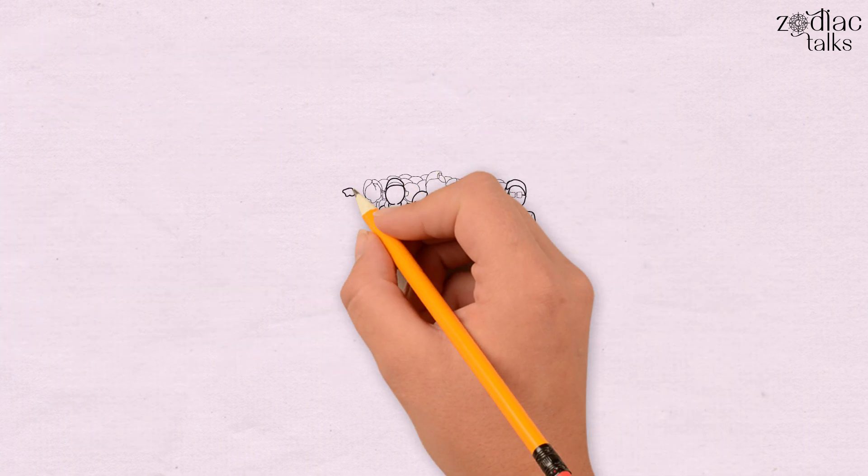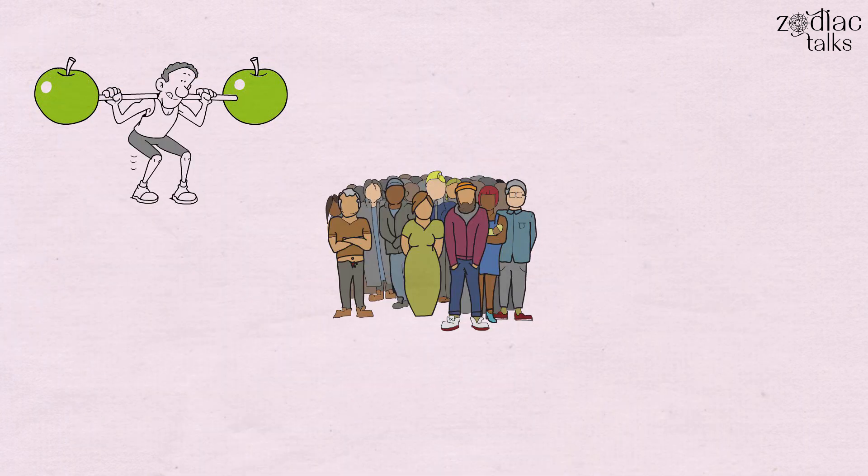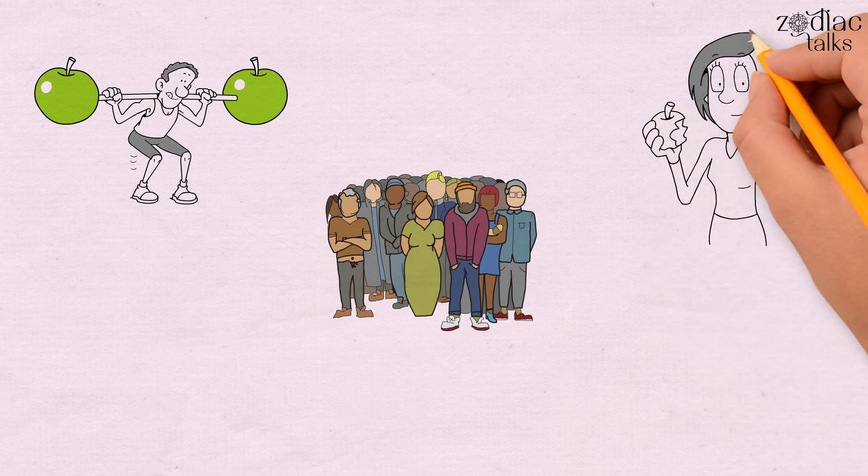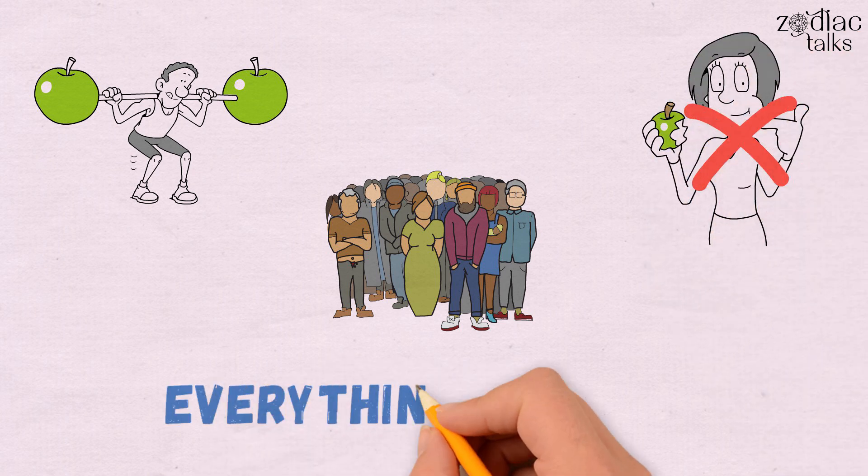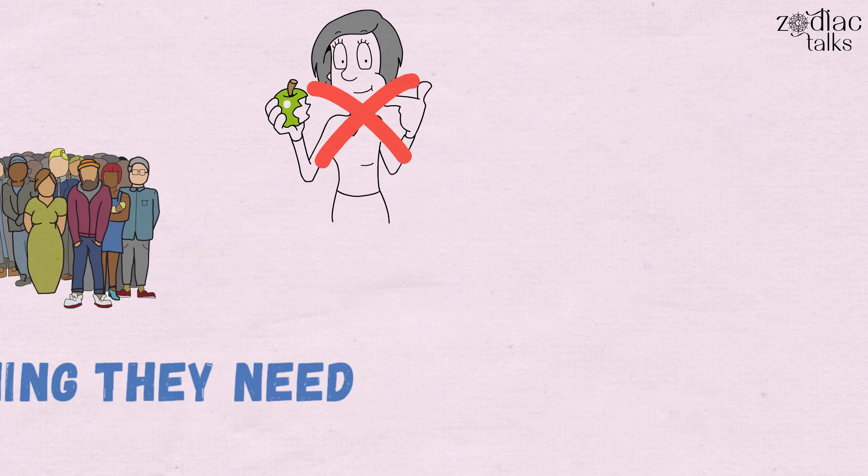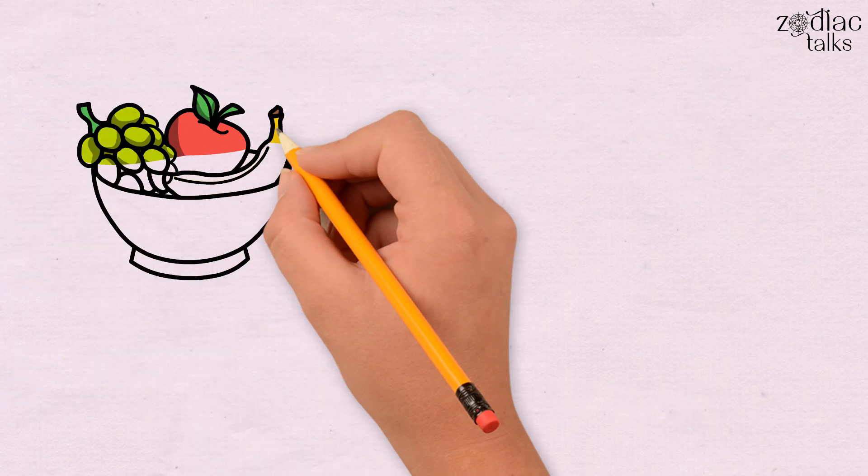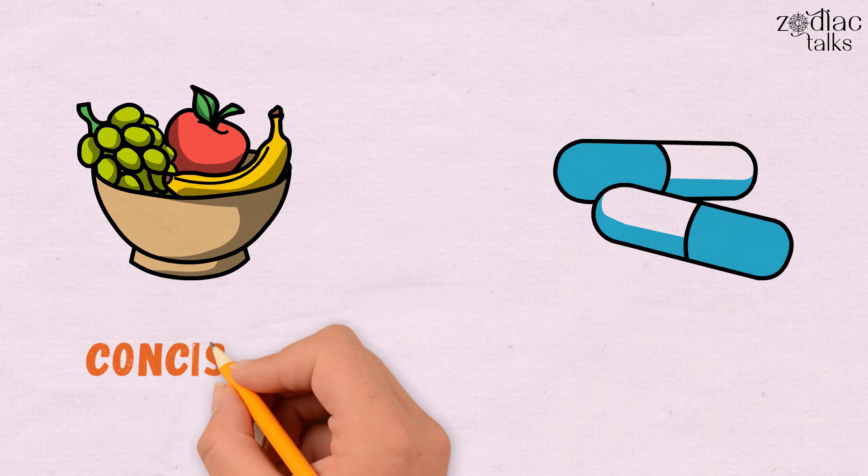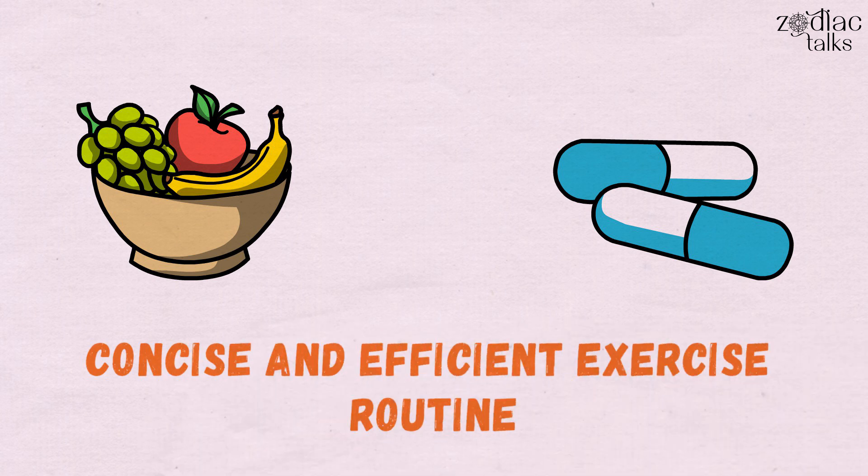People with planets in the Sixth House pay attention to the nutrition of their diet. They do not eat just to feel satisfied, but to nourish themselves with everything they need. That's why they include superfoods and multivitamins in their regimen and have a concise and efficient exercise routine.